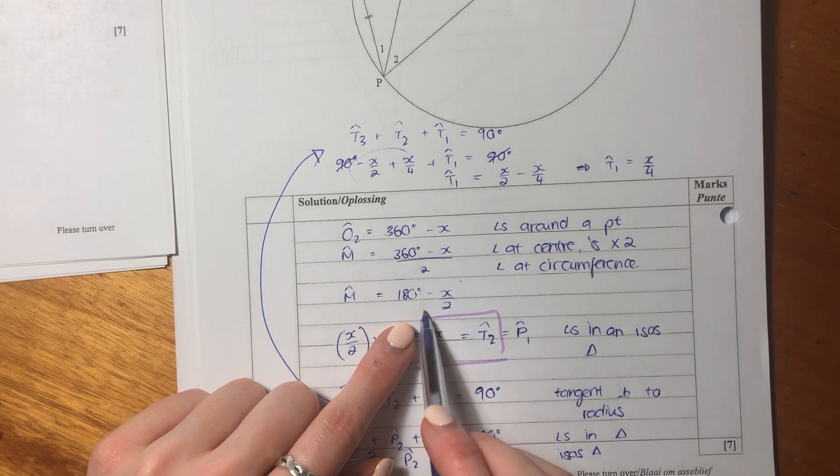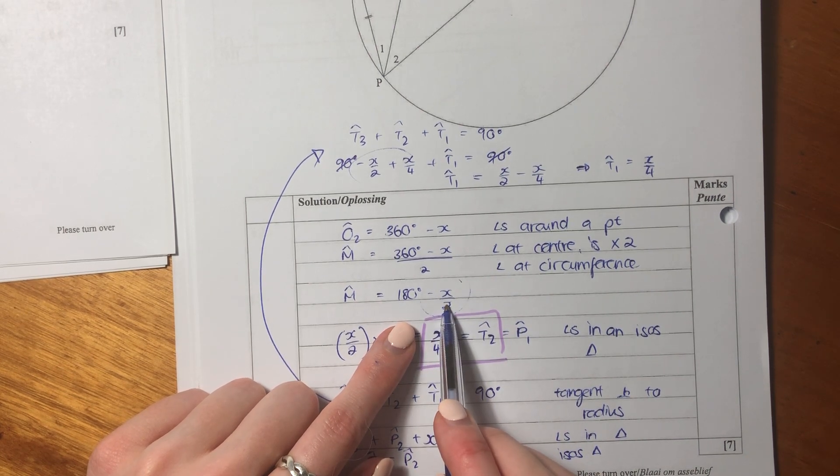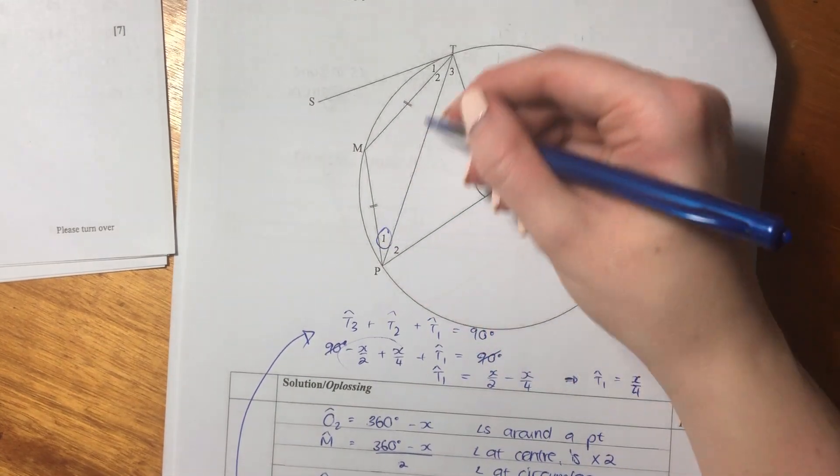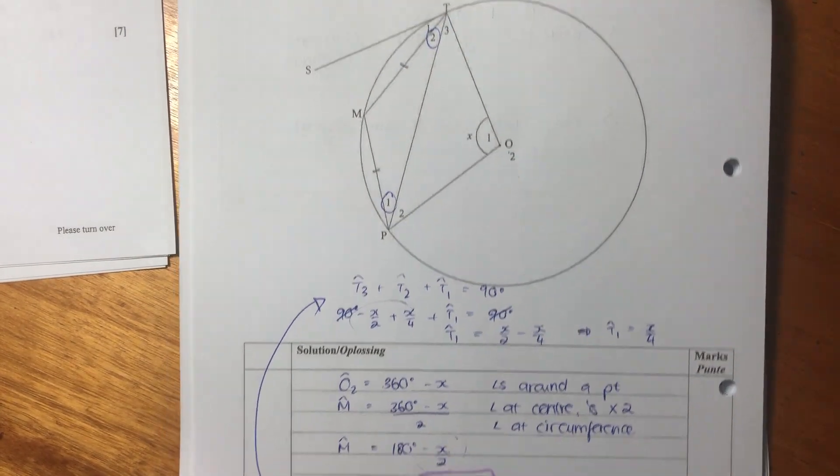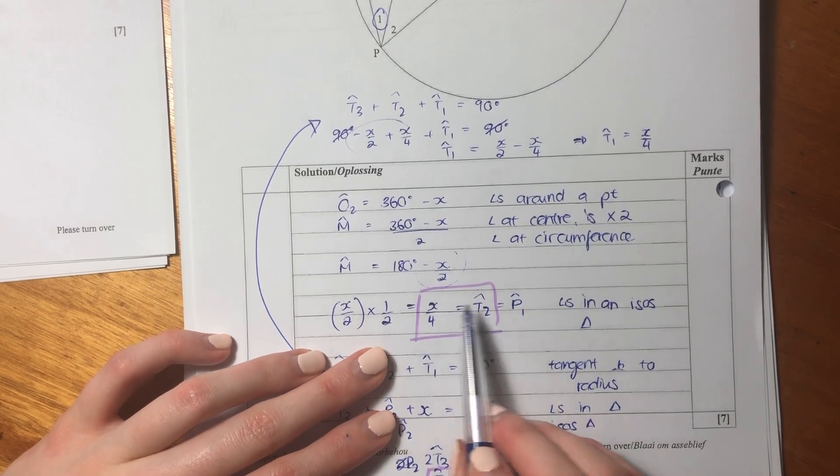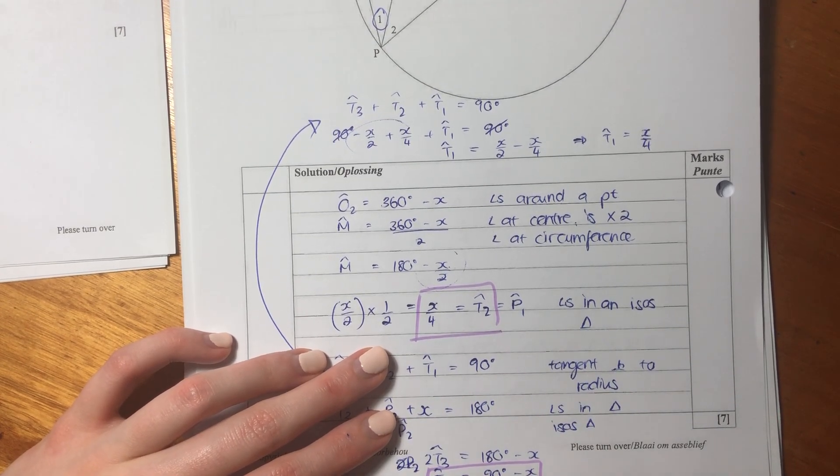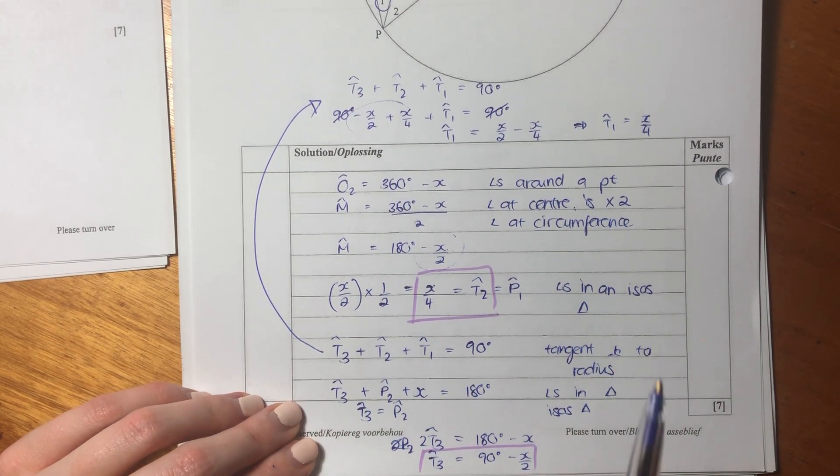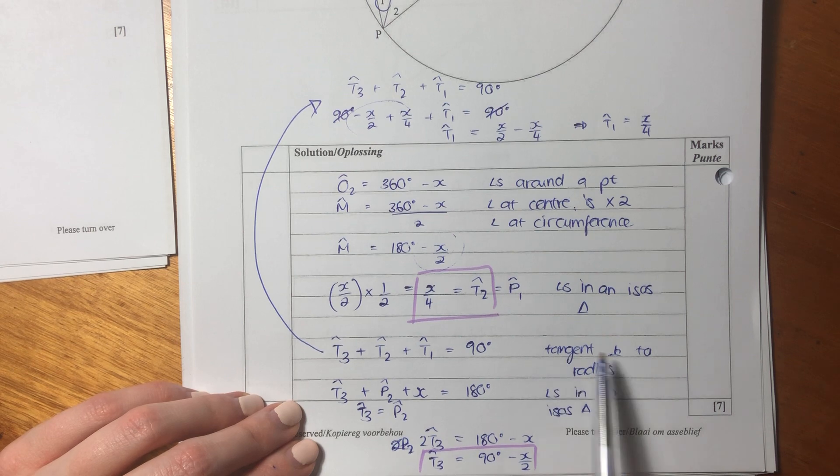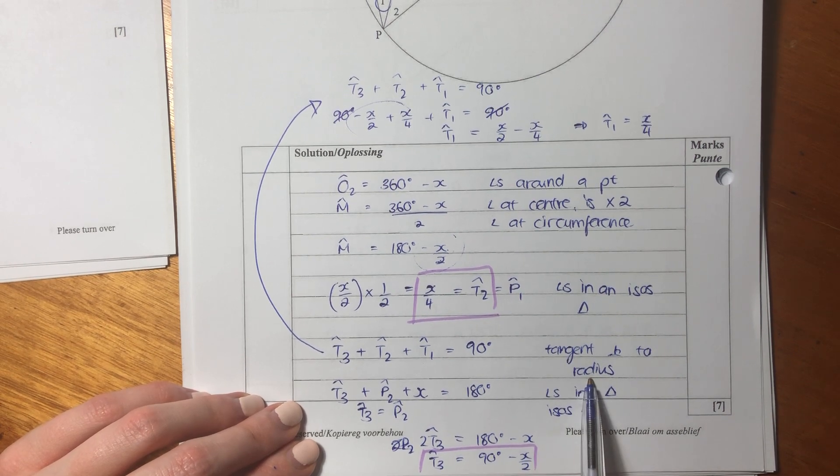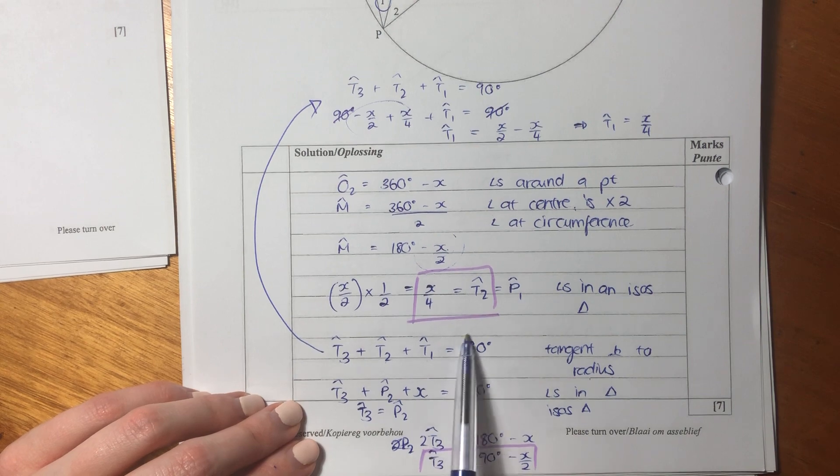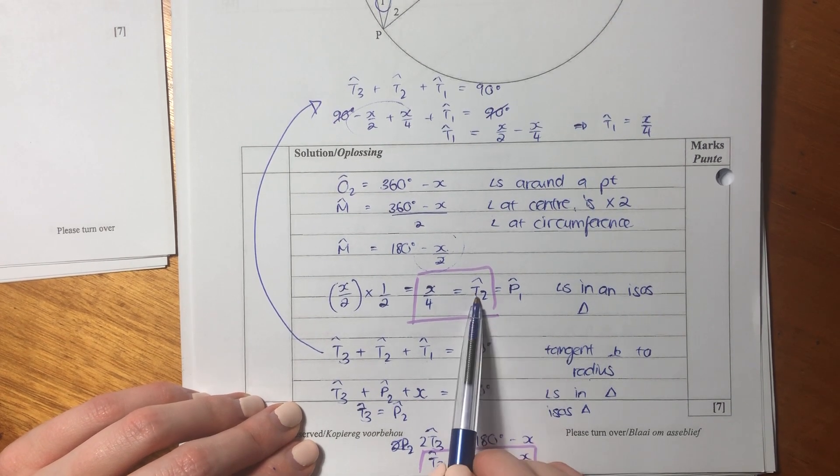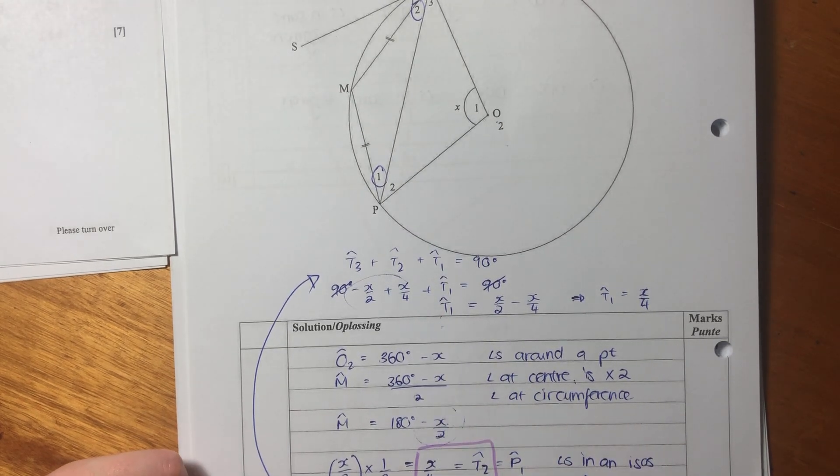Then we said, we know that M is one angle in this triangle, and it's an isosceles triangle. So this X over 2 over here, if you divide that by 2, you'll get what each of those other angles in that isosceles triangle is. So then we got T2 and P1 both equal X over 4. Then what we said is we said, we know that the tangent is perpendicular to the radius. So we know that T3 plus T2 plus T1 equals 90. We worked out what T3 was. We had what T2 was, and then we just worked out T1.